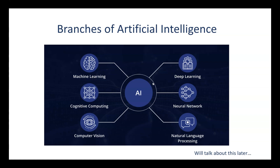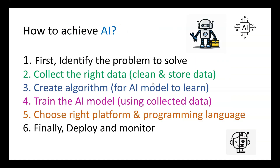So how do we achieve AI? The first step is to identify the problem to solve. Before developing a new product, it is essential to figure out the problem so that you can solve it. The second step is to collect the right data. It's not only about collecting the data — once you collect it, it must be cleaned and stored somewhere to feed the AI. This will help fix errors and improve the data quality.